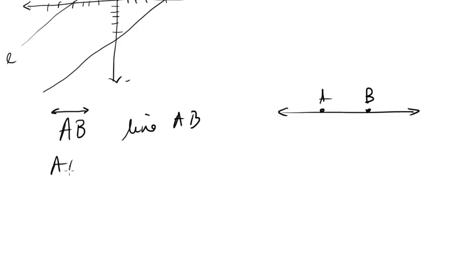How about this? AB with just one headed arrow, this would be ray AB. So a ray has a terminating point, but then it goes forever in one direction, and again, we could call this points A and B, and that would define the ray.